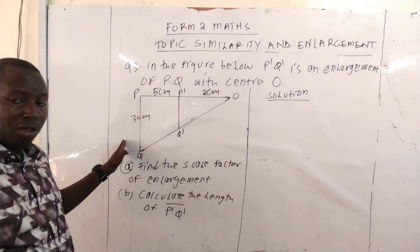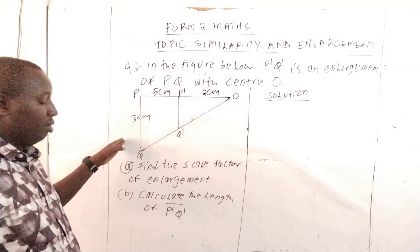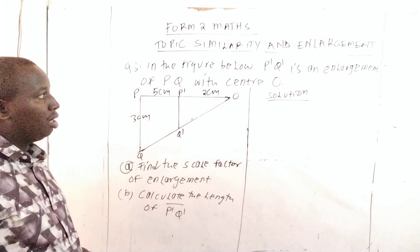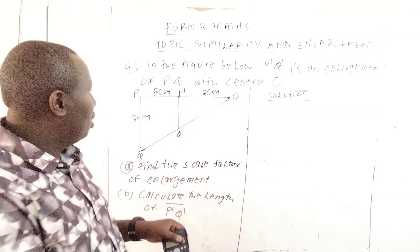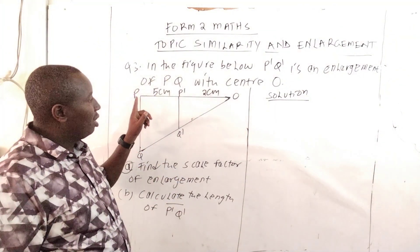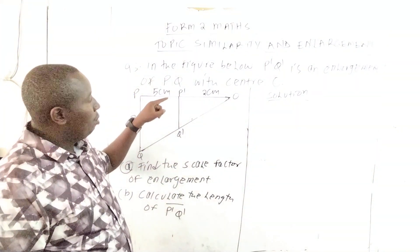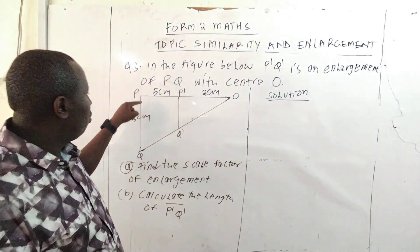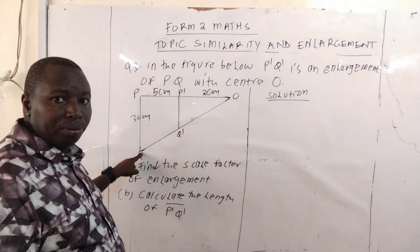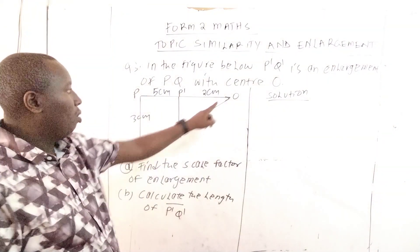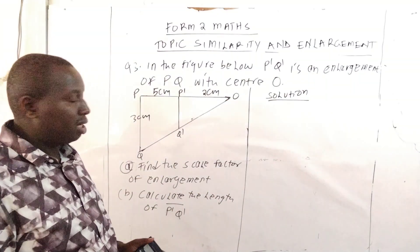I've already provided a question here on this board. You are given a triangle in the figure below. P1Q1 is an enlargement of PQ with center O, the center of enlargement.